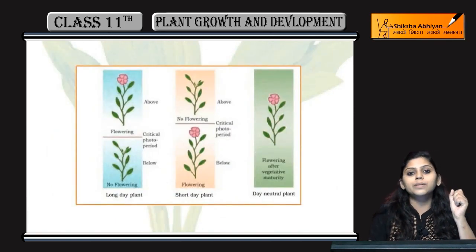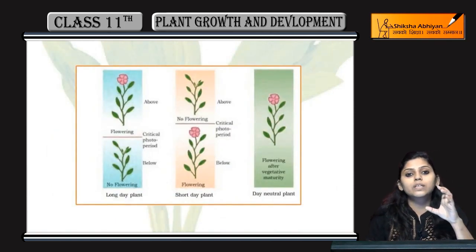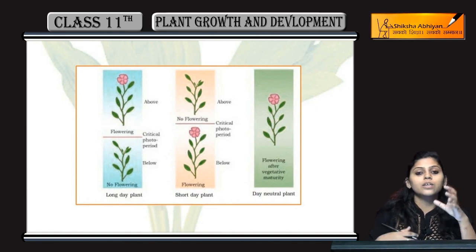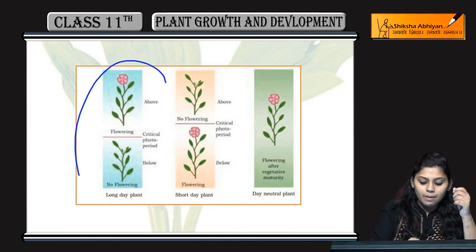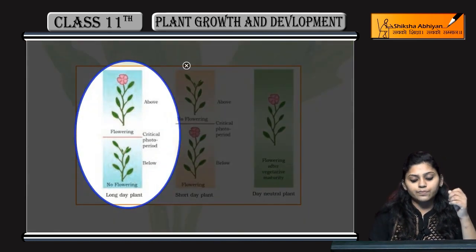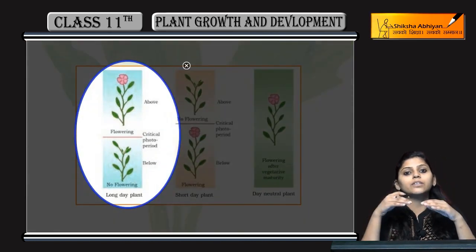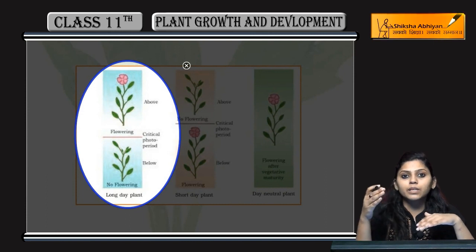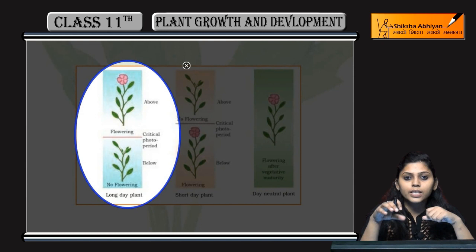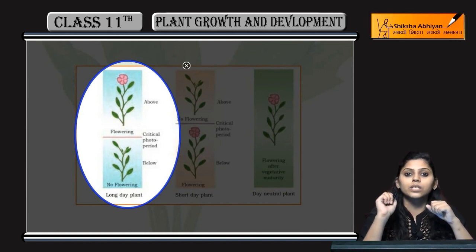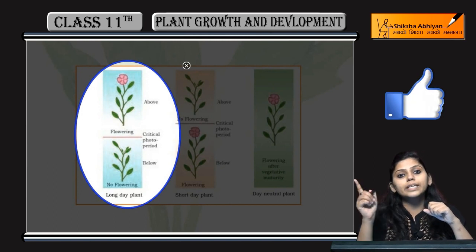Necessary inductive photoperiod means उन्हें critical duration से ज़्यादा या कम मिलना चाहिए उनकी flowering के लिए. हम अगर देखें long day plant — पिच्चो में देख सकते हैं — अगर critical duration से ज़्यादा time मिला है, light का exposure ज़्यादा मिला है, तो flowering होगी. अगर critical duration से कम light मिली है तब flowering नहीं होगी — in case of long day plant.